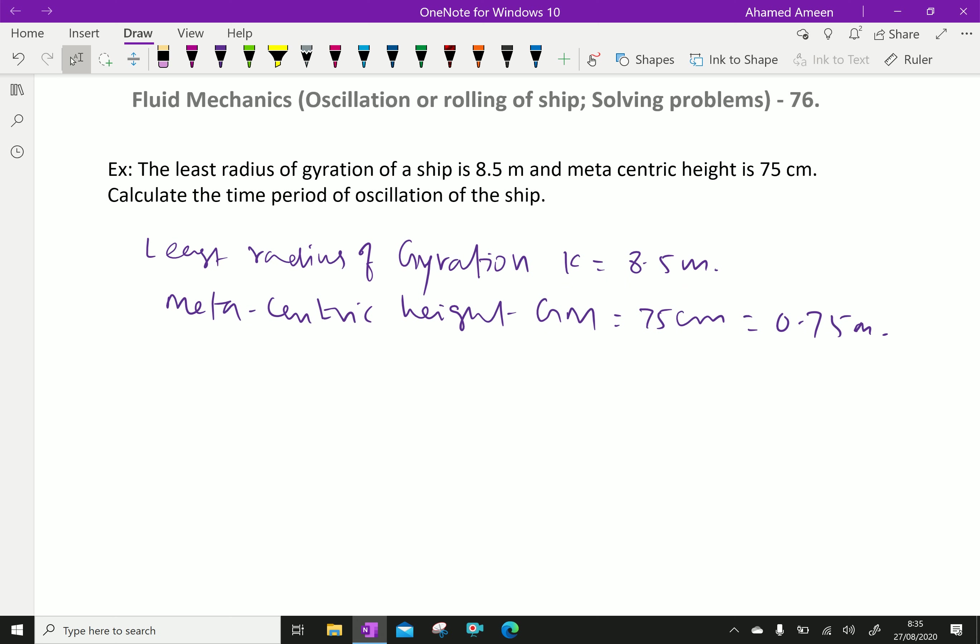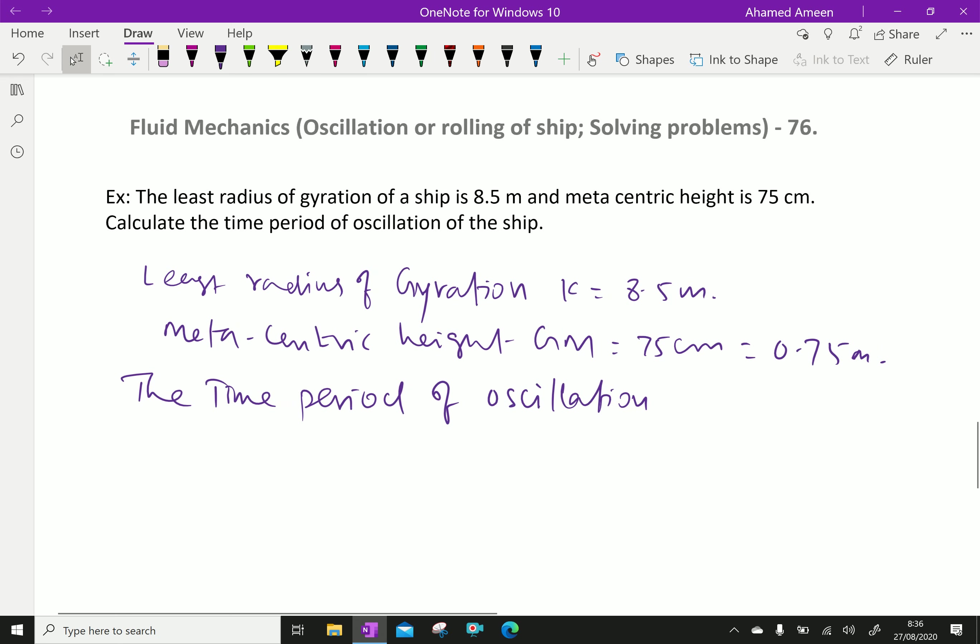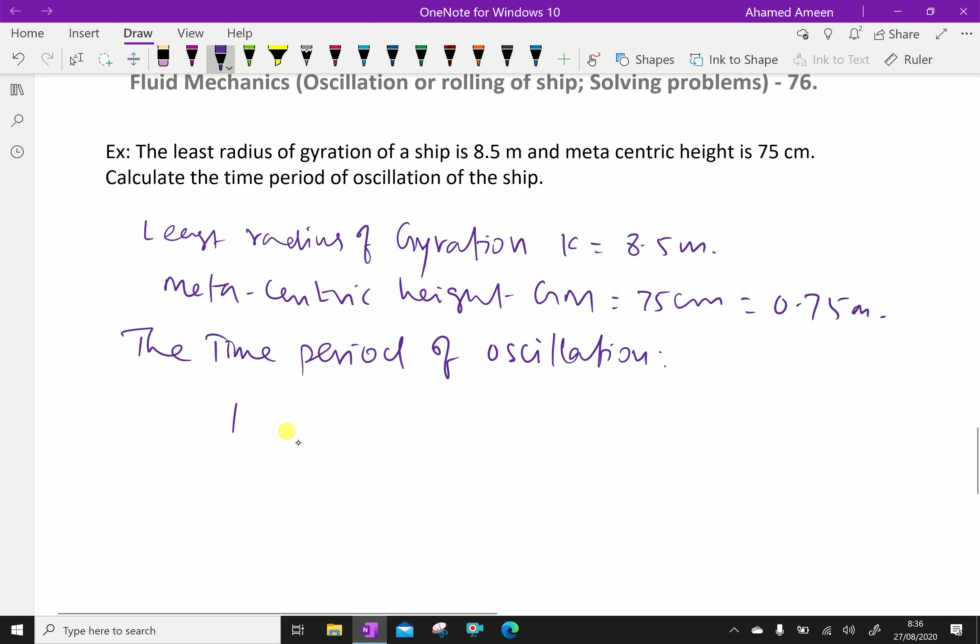The time period of oscillation is given as t equals 2 pi square root of k square over gm into g, which equals 2 pi square root of 8.5 square, gm is 0.75, and g is 9.81.